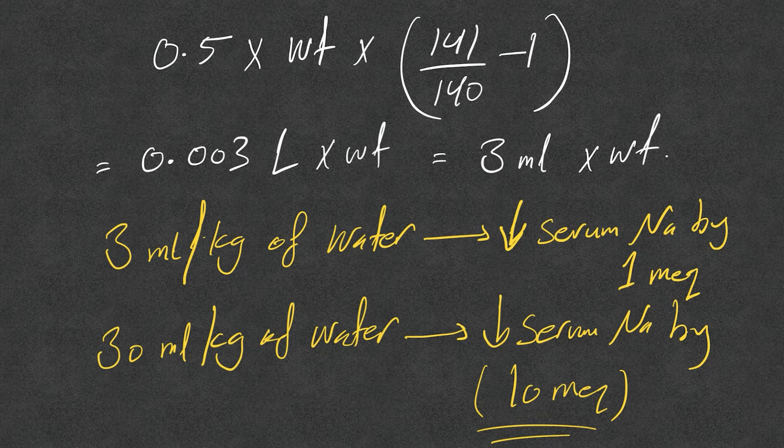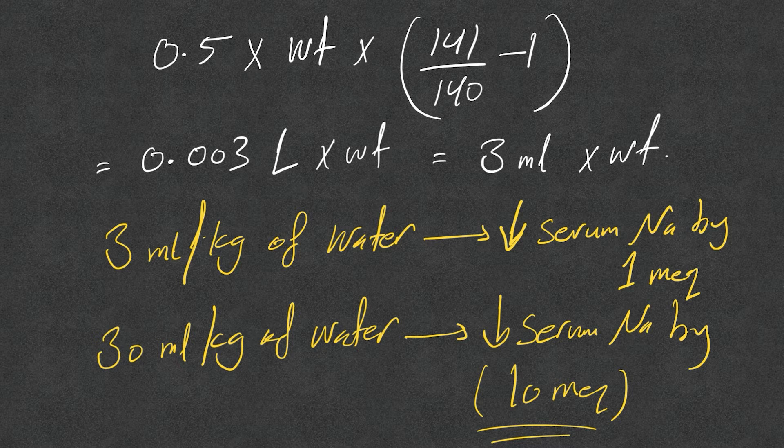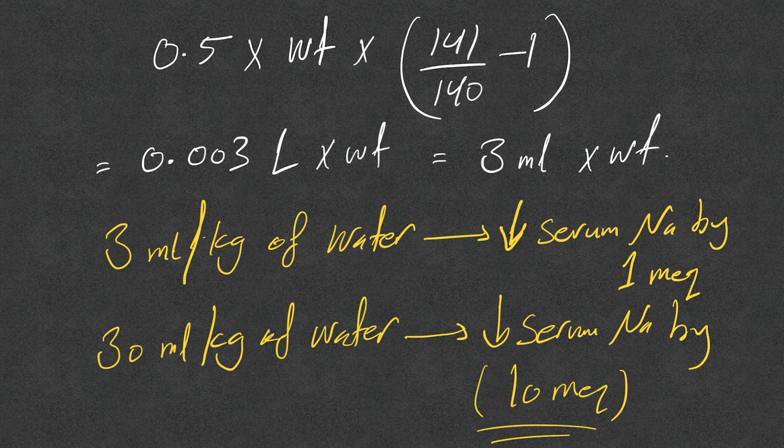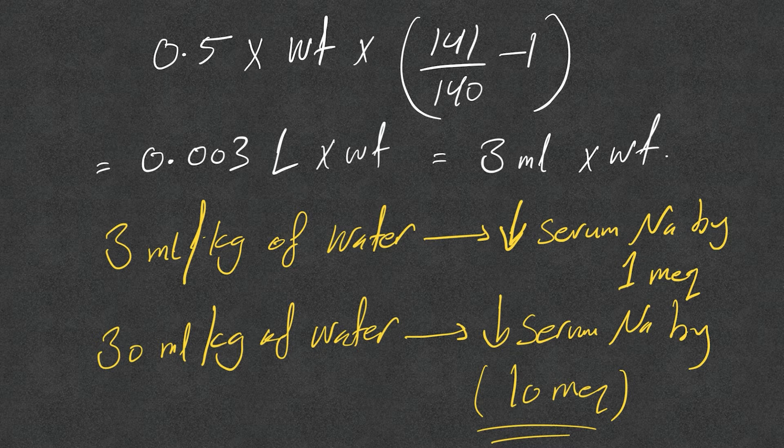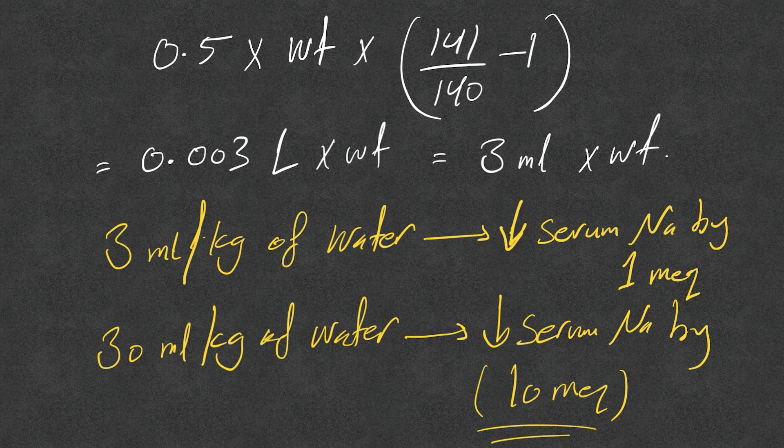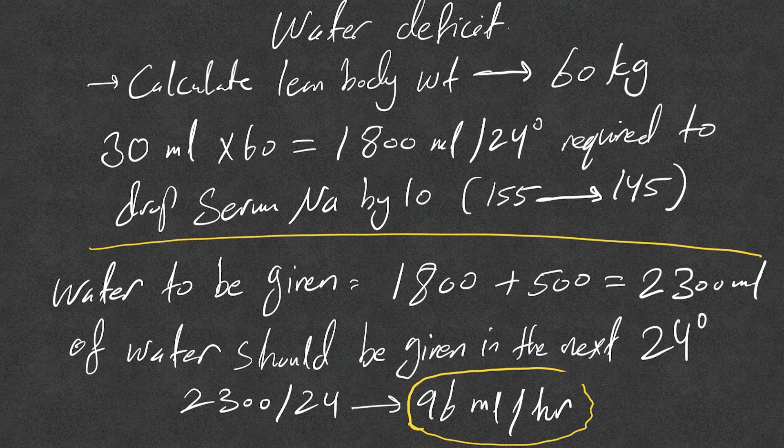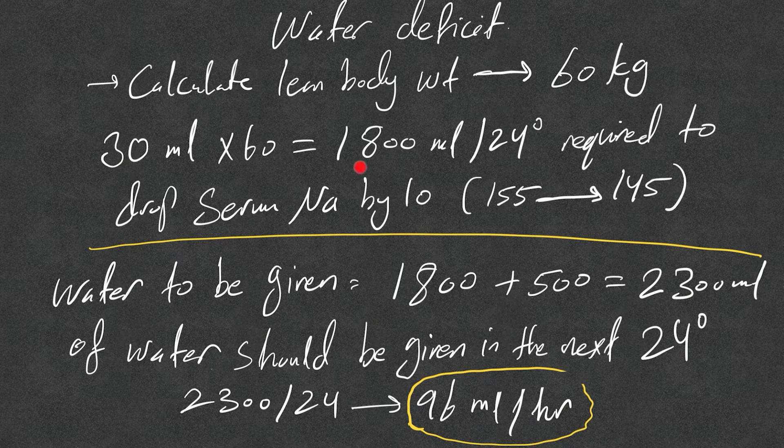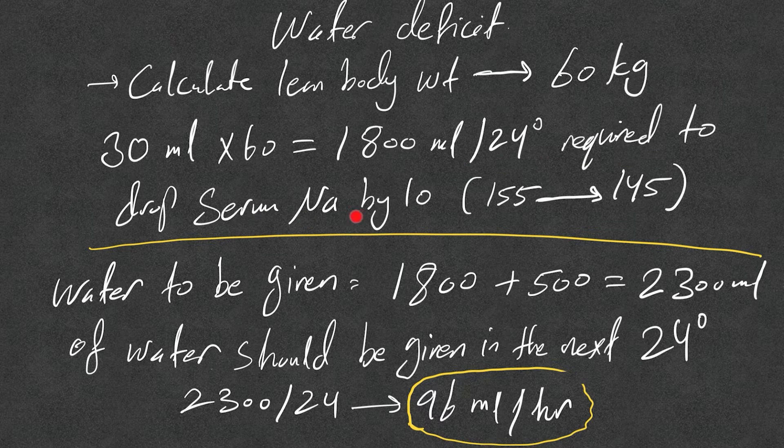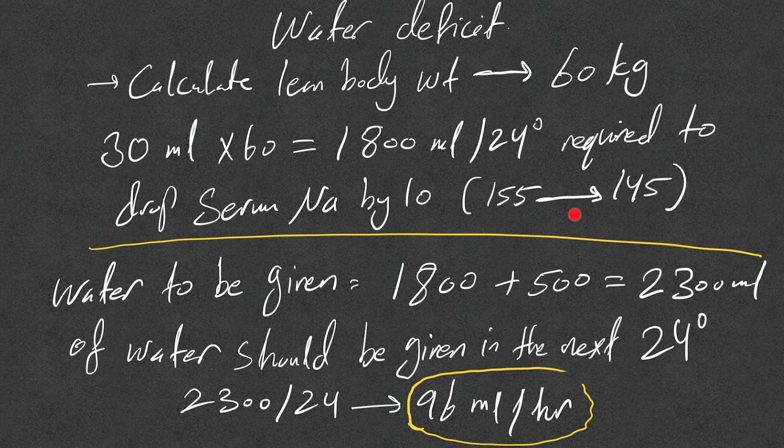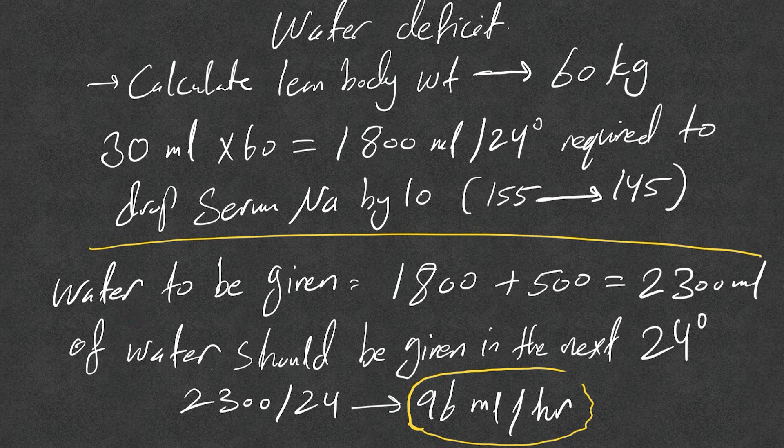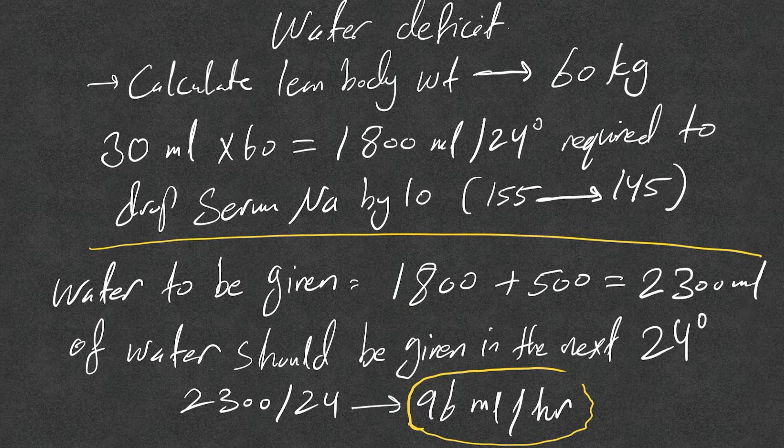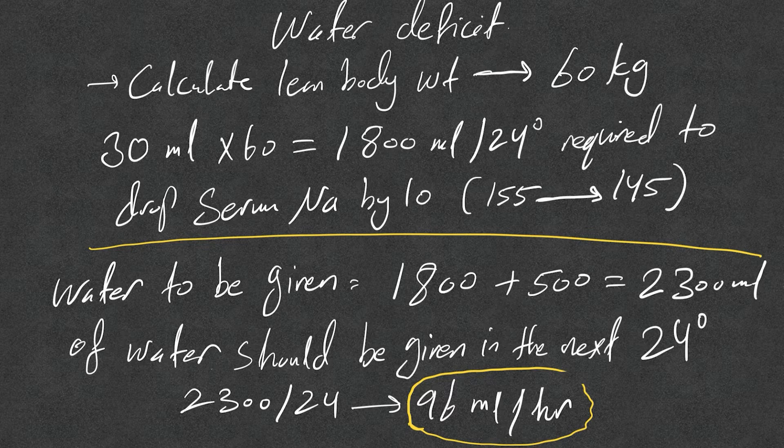So let's use the example we just used. We said the lean body weight was 60, 30 ml by 60, we need 1800 cc ml per 24 hours required to drop sodium by 10 milliequivalents from 155 to 145. So water to be given is 1800 plus the 500 ongoing losses, that's 2300. Very close, right, from 2100. So the rate will be 96 ml per hour.